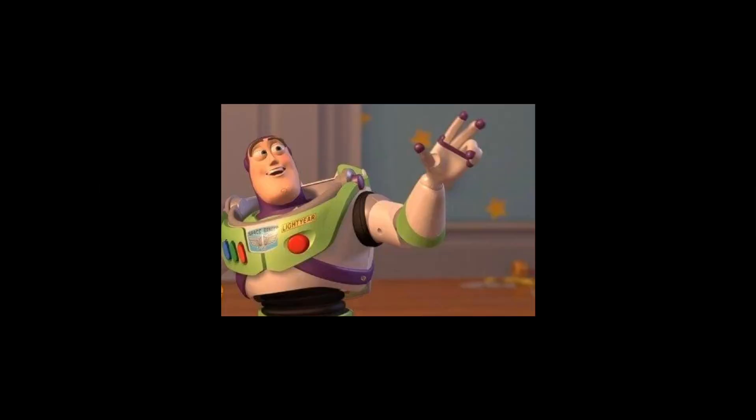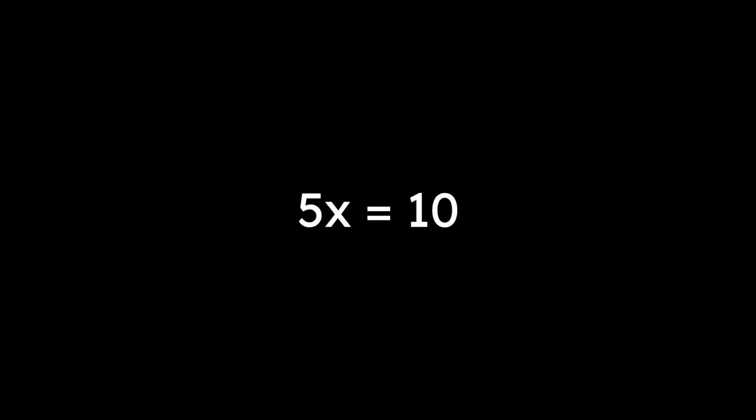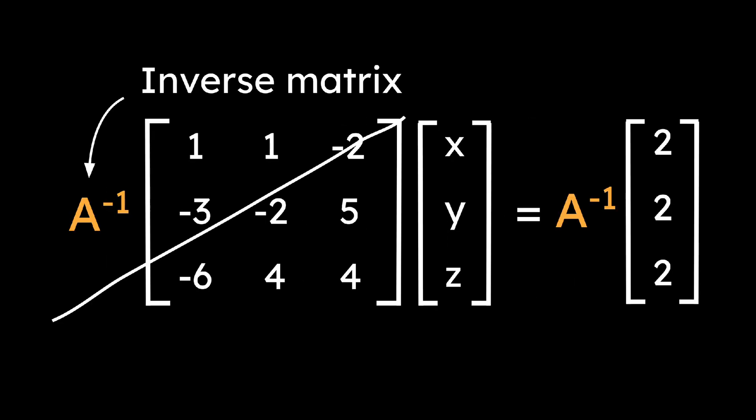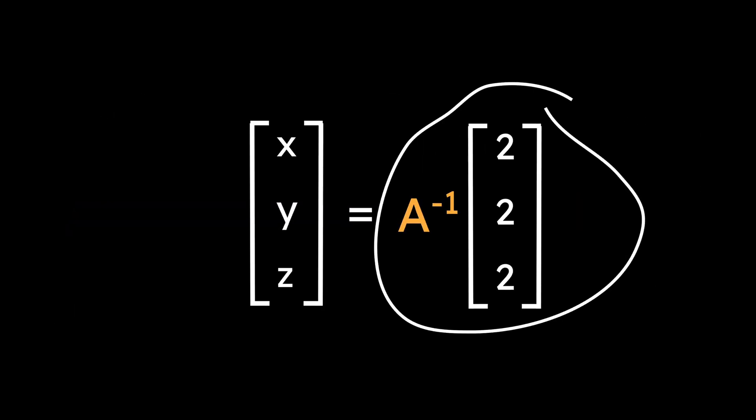Last thing, matrix inverses. Here's a simple analogy. Let's say we wanted to solve 5x equals 10. How do we do this? Well, we multiply both sides by 1 fifth, which cancels with the 5. In a similar way, if we wanted to solve this matrix equation, we could multiply by an inverse matrix, which would cancel out this matrix, leaving us with an answer on the right side.